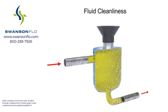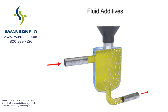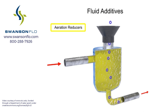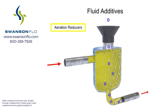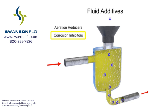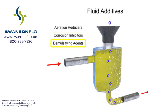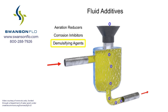Another factor common to hydraulic fluids is the use of additives. Additives can be used to reduce aeration and the production of bubbles as the fluid travels rapidly throughout the system. They can be used to administer corrosion inhibitors within the reservoir, and they can be used as a demulsifying agent, which helps the fluid resist mixing with water.